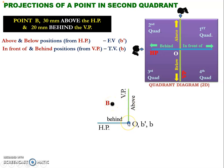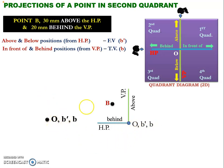You can see the origin point. Temporarily, I am assuming that the front view point b' and the top view point b are located at the same origin. For easy explanation, I am just relocating this point over here. One thing you should keep in your mind: the b' point can move only in the vertical direction and the b point can move only in the horizontal direction.